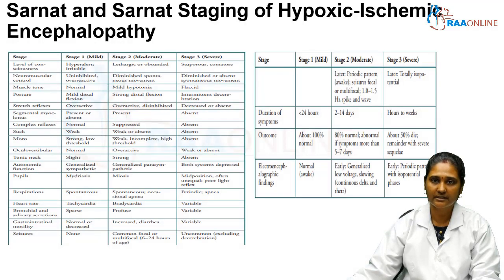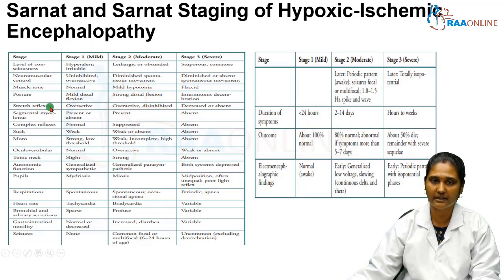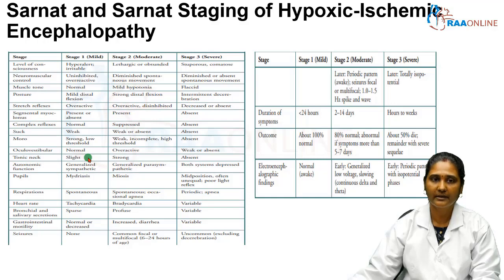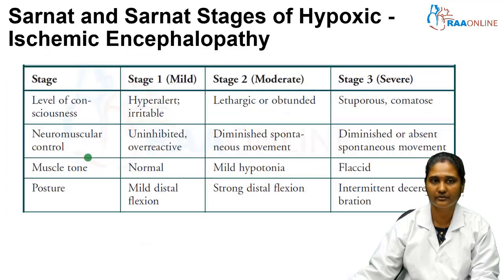Coming to the staging, the staging of HIE is given by Sarnat and Sarnat staging, which includes almost 19 parameters. To make it easier, these have been divided into groups under common headings so that you can remember them and not miss anything. The first group of parameters covers CNS parameters, since this is hypoxic ischemic encephalopathy.